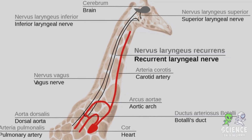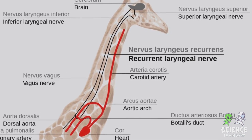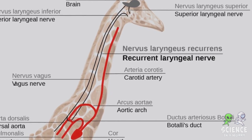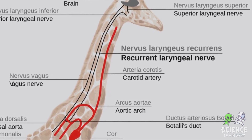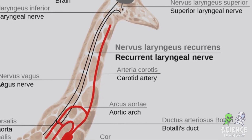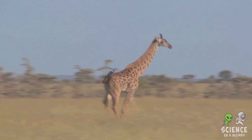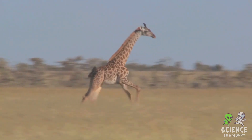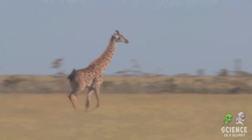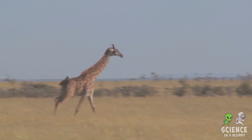This nerve, rather than taking the most direct route from the brain to the larynx, instead embarks on a grand detour — descending into the chest before looping back up to the larynx, a journey of several metres in a creature whose neck alone can be up to two metres long. This anatomical quirk is what we call a historical contingency in evolution.